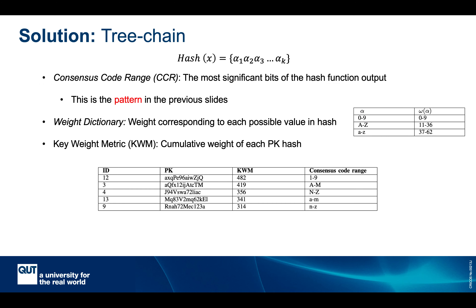Some basic concepts of Tree-Chain: we define a Consensus Code Range (CCR), which refers back to the same pattern we discussed. The CCR is the most significant characters of the hash function output — for example, if the hash output is alpha-1 to alpha-k, the CCR can be 1 (referring only to alpha-1) or 2 (referring to alpha-1 and alpha-2), and so on.